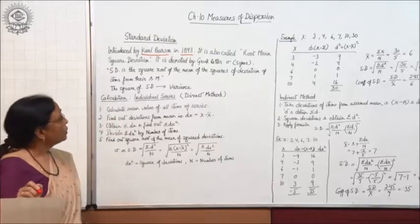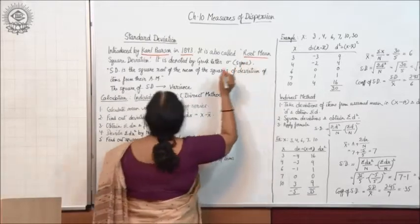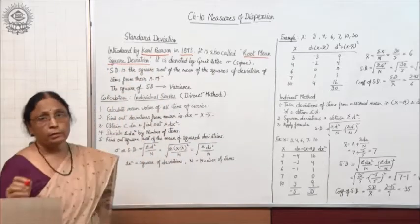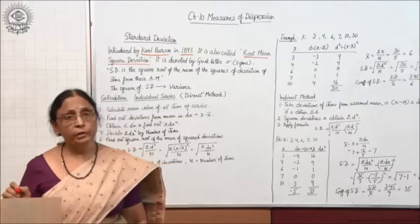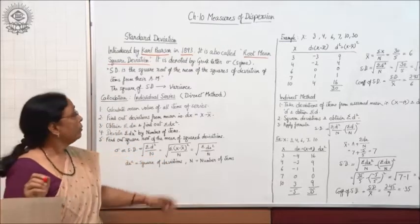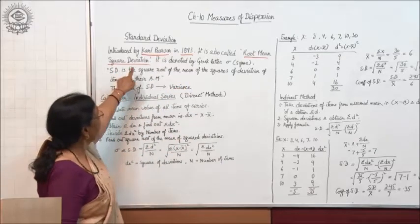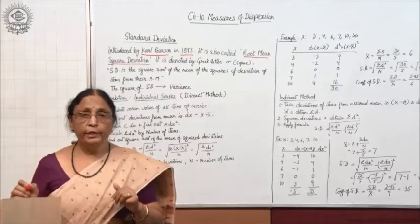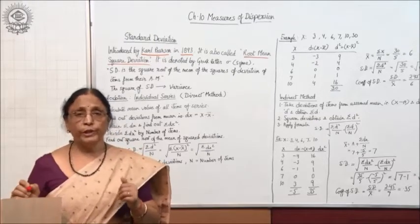Standard deviation is also called root mean square deviation. This is another name for standard deviation. In short we call it standard deviation, but another name is root mean square deviation, because the square root is taken out of the square deviations.